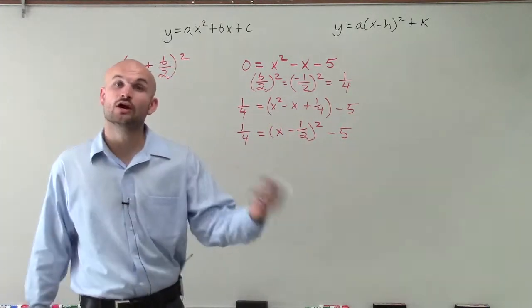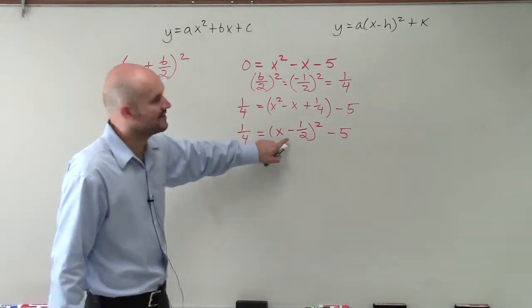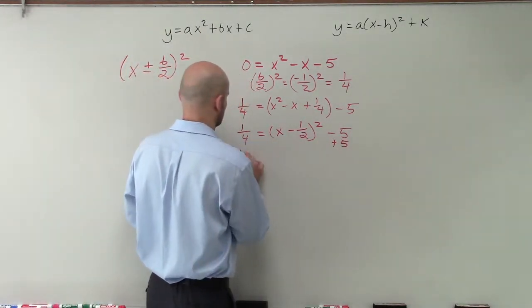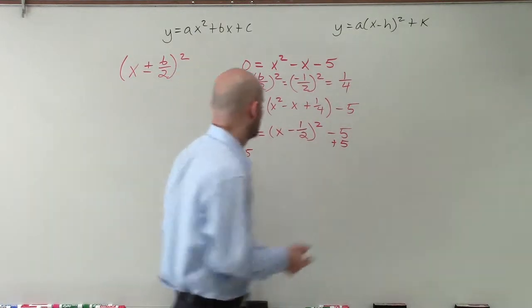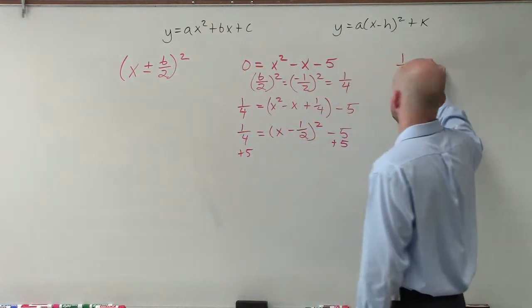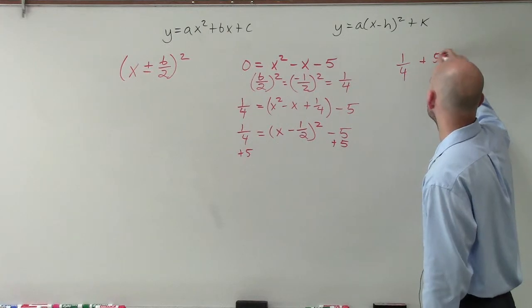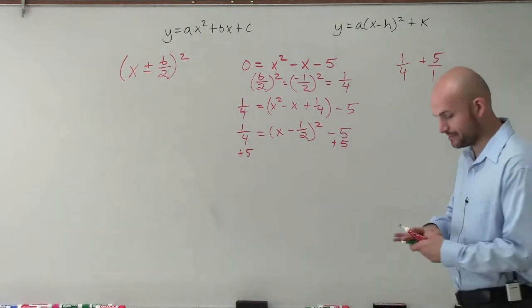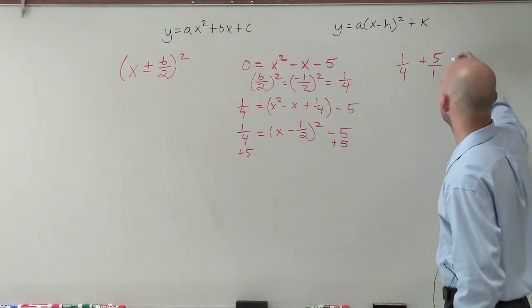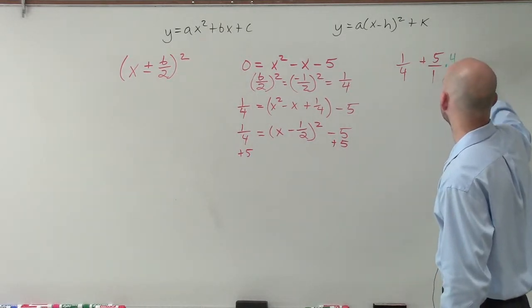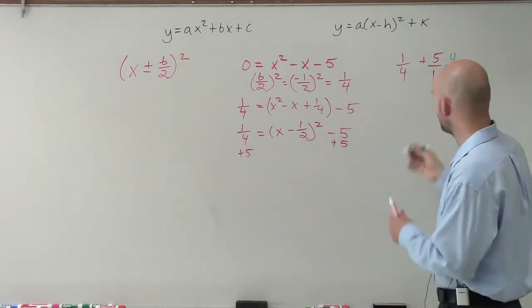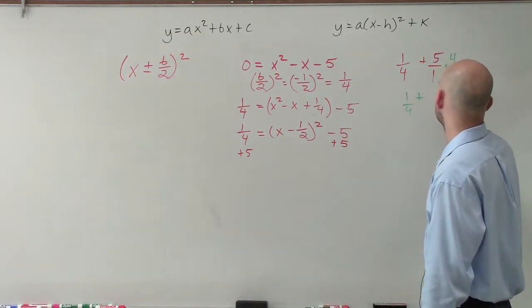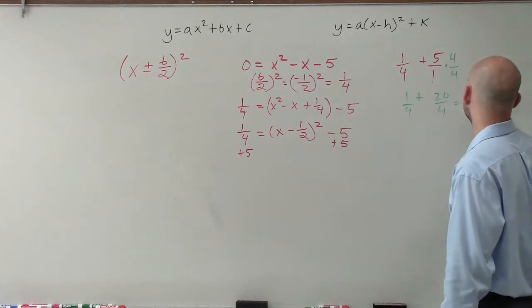Now we need to solve this. So we need to use our inverse operations to isolate our value x. So I'm going to add a 5 to the other side. All right, now we have to add a fraction to an integer. Well, to do that, I need to make sure I make this as a denominator with 1. And then I need to have common denominators. So I'm going to multiply by 4 over 4, which therefore, that's going to give me 1 plus 20 with the same denominator as 4, which equals 21 over 4.